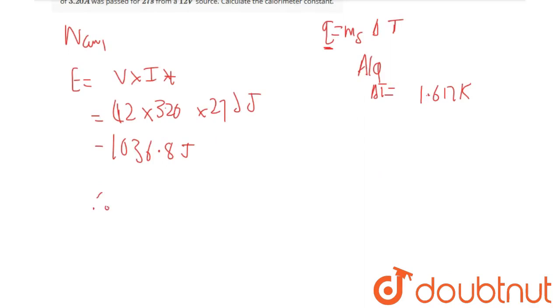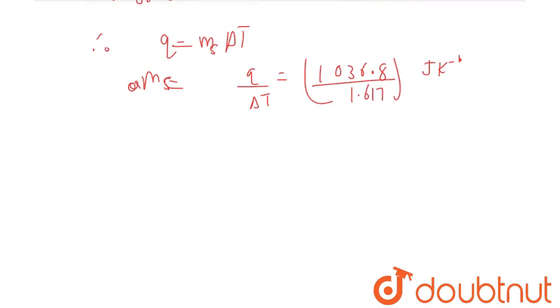Therefore, Q equals ms delta T. Solving for ms, we get ms equals Q divided by delta T, which equals 1036.8 divided by 1.617 Joules per Kelvin.